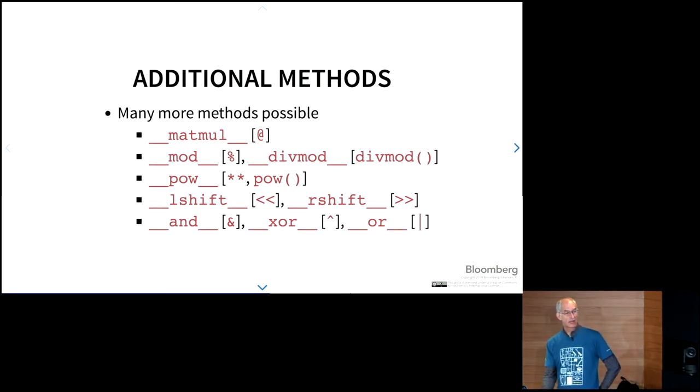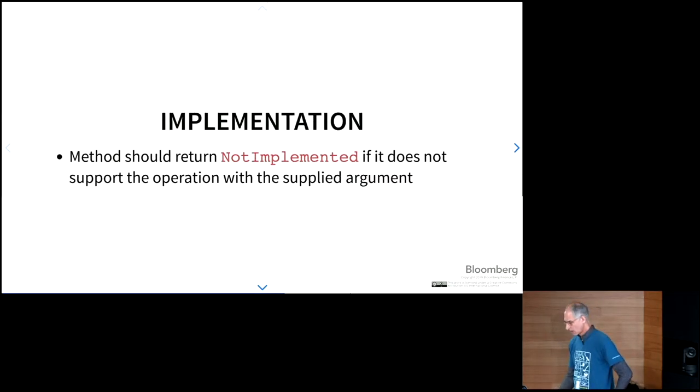There's a bunch more methods that are available if you really want to go and implement a fully functional numerical type. There's matrix multiply, mod, div mod, pow, left shift, right shift, and the bitwise and xor and or. If you are implementing it and you're not going to support a particular style of argument, you should return not implemented. So if you have your numerical class and somebody gives you a string object, and you don't know how to add a string object to your object, you should return not implemented.